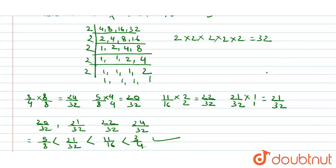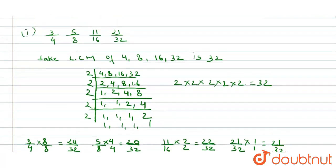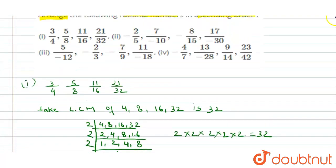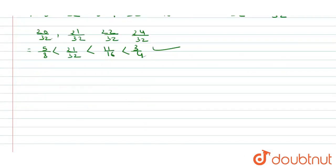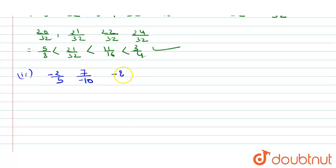Now for the second question. The numbers given are: -2/5, 7/(-10), -8/15, and -17/30. We will use the same process — find the LCM of the denominators and convert all fractions.